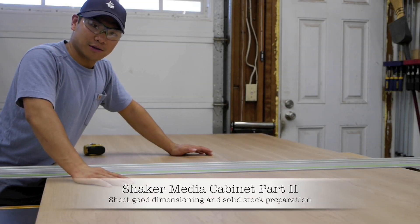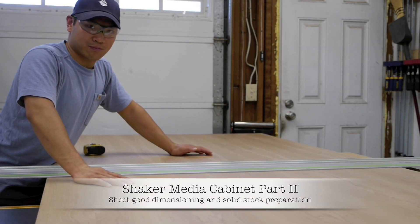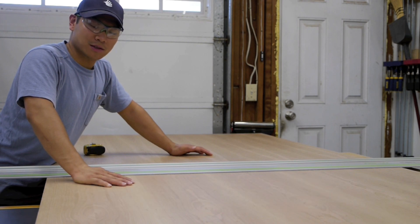Here I have a piece of cabinet grade cherry plywood. After I break it down it's going to become the base, shelving and dividers for the unit.